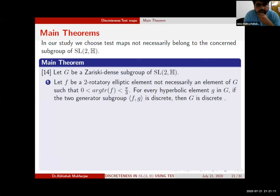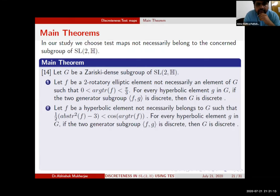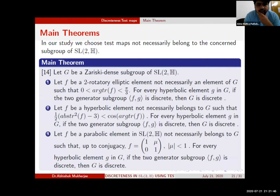The second result: if we consider f to be a hyperbolic element, not necessarily in the group G, satisfying (|tr(f)|²/2 - 3) < cos(arg(tr(f))), and if for every hyperbolic element g in G, if the two-generator subgroup (f,g) is discrete, then the whole group capital G is discrete.